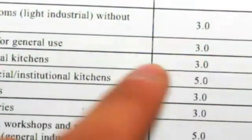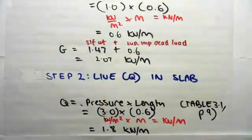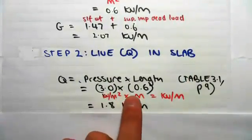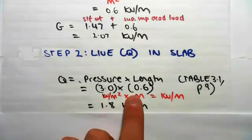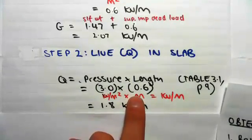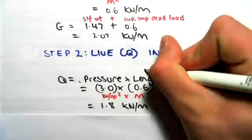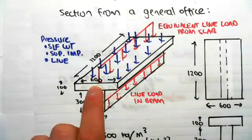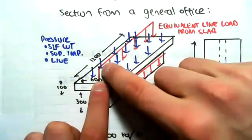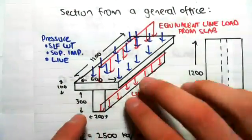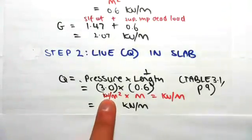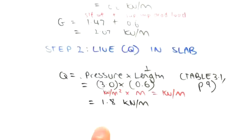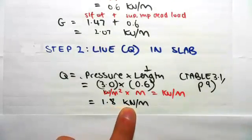Our live load pressure is 3 kPa. We multiply that by the perpendicular length of 0.6 meters, just as we did for the superimposed dead load, to get a UDL parallel to the beam. So 3 × 0.6 = 1.8 kilonewtons per meter.